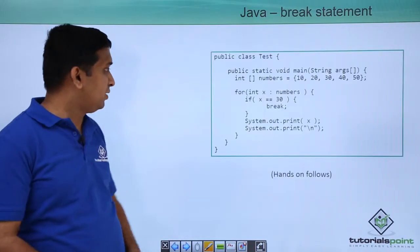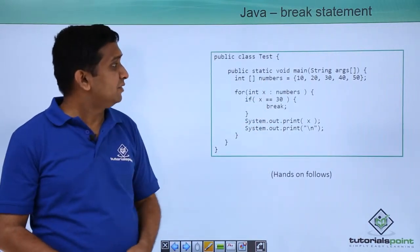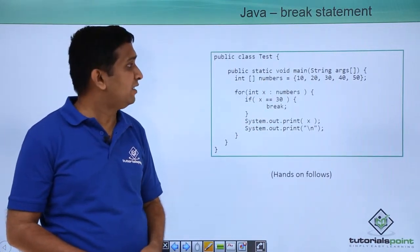One code example is also shown in which one array is there. The values inside the array are 10, 20, 30, 40, 50.